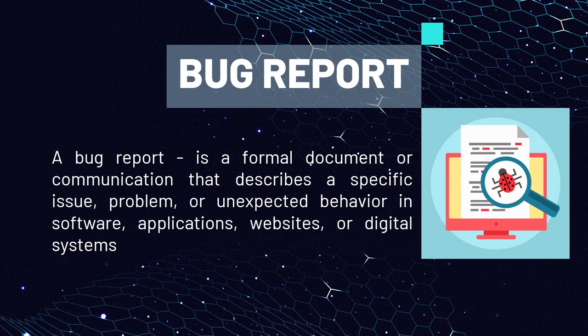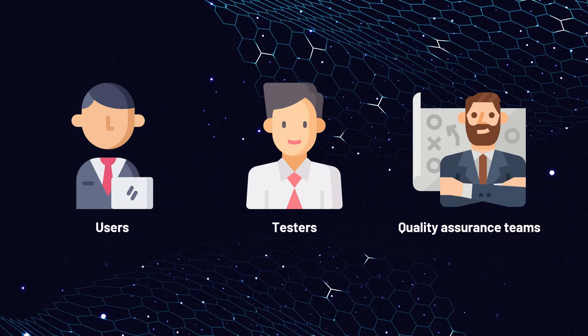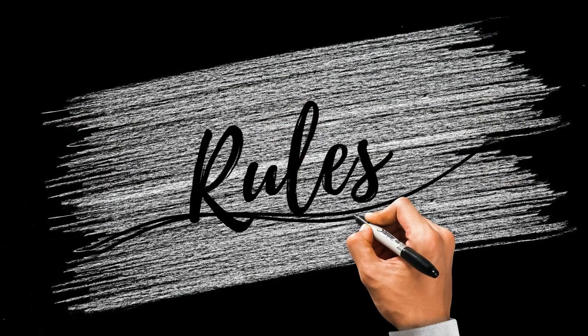To write a bug report effectively you first need to understand what it is. A bug report is a formal document or communication that describes a specific issue, problem or unexpected behavior in software, applications, websites or digital systems. Typically, users, testers or quality assurance teams submit bug reports to notify developers about issues they've encountered. Writing a clear and effective bug report involves following certain rules and guidelines to ensure that developers can understand and address the issue efficiently.